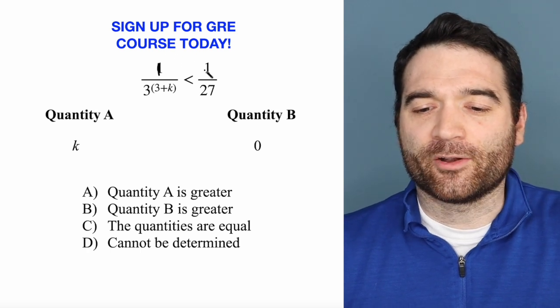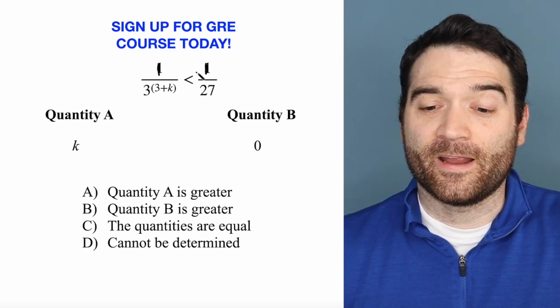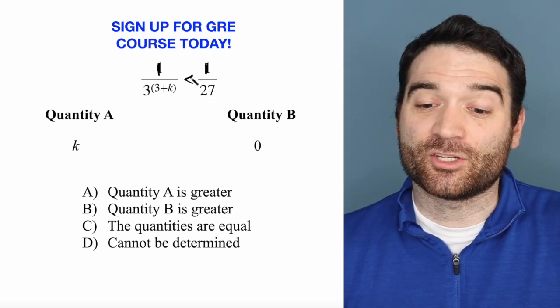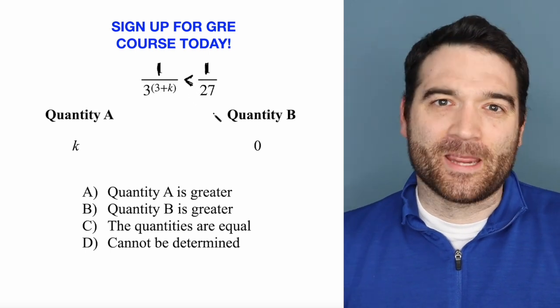In this case, the numerator of both fractions is the same, right? The denominator is different, though, because this fraction is bigger. Well, what does that mean?